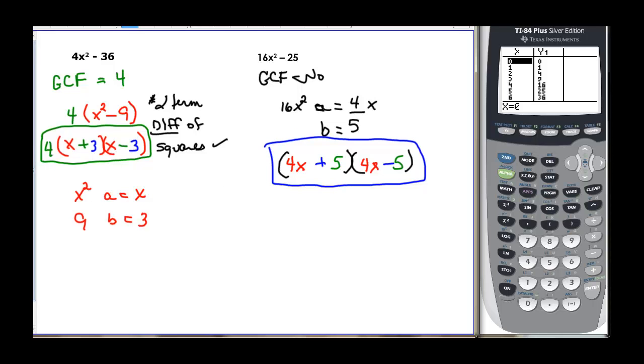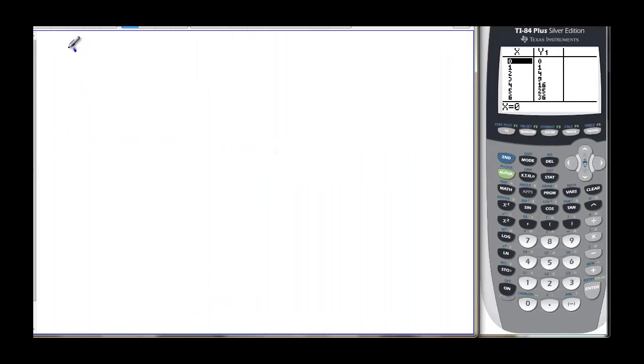So I want to take some time to think about a strategy. Step 1 is always find the greatest common factor. Step 2 is find the number of terms. Because we factor different types of problems differently, depending on the number of terms. If there's 2, then you have to ask yourself, is it a difference of squares? If it is, you can go further. If it's not, you're done.